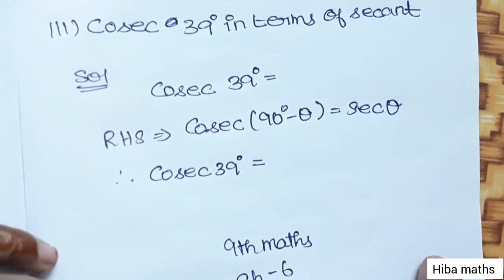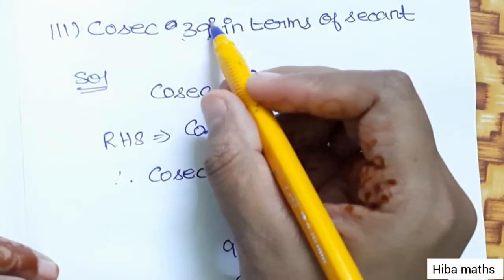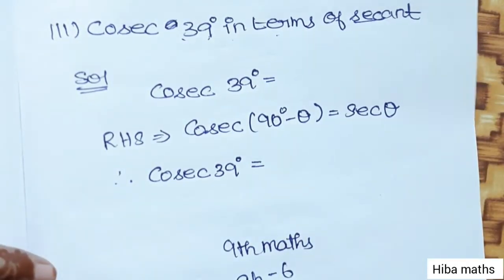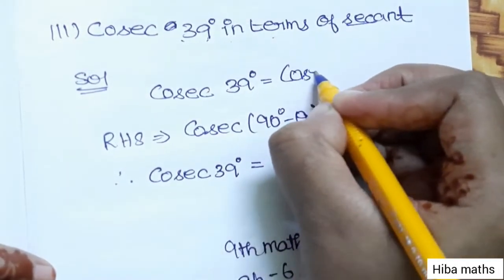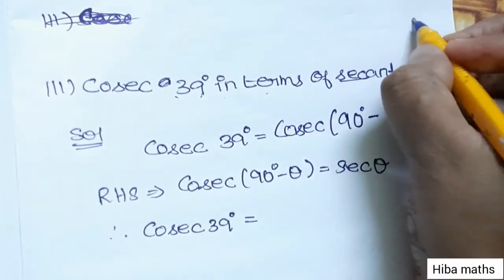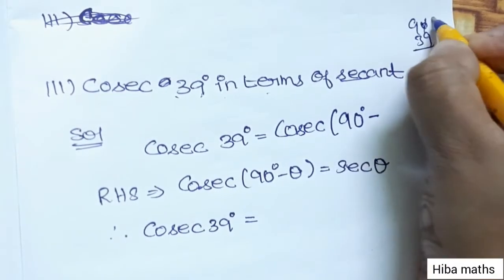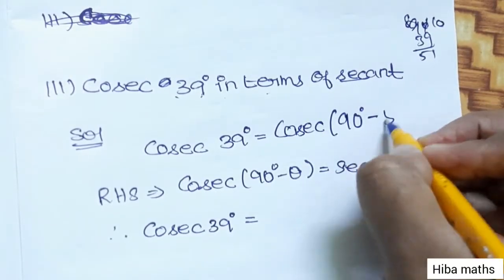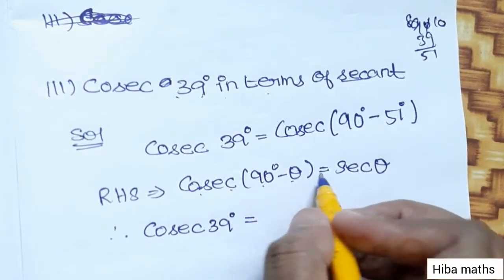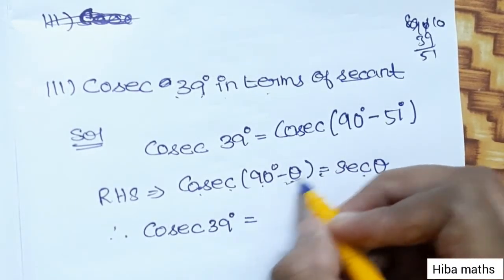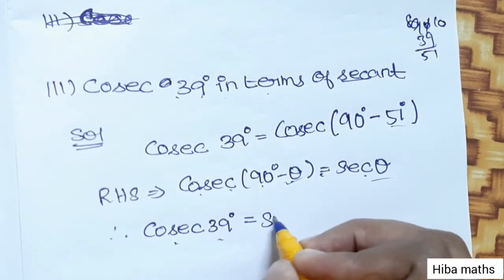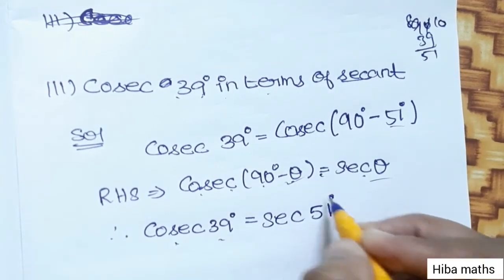Third subdivision: cosecant 39 degree in terms of secant. Cosecant 90 minus theta is equal to secant. So cosecant 39 degree is equal to secant 51 degree.